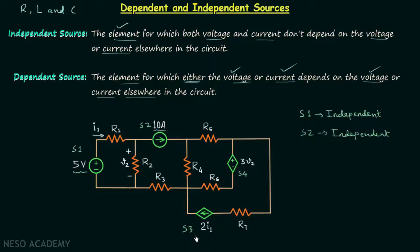Source S3 is a current source providing current equal to 2 times I1. The current provided by this source depends on current I1, which is the current through resistance R1. Since the current provided by the source is dependent on the current present in another part of the circuit, source S3 is a dependent source.